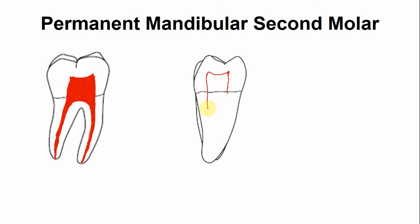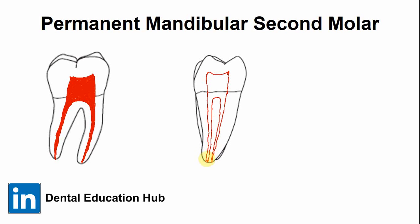In the mesial root there are two canals: one is the mesiobuccal canal and the second is the mesiolingual root canal. Usually both of these canals exit through separate apical foramina. This is the mesiobuccal canal and this is the mesiolingual canal.